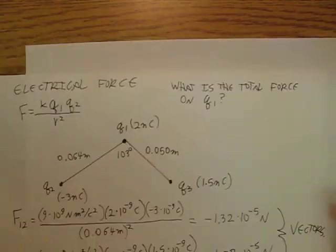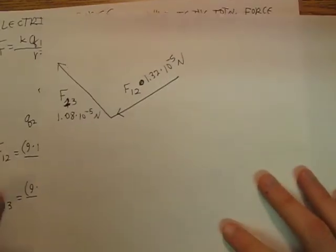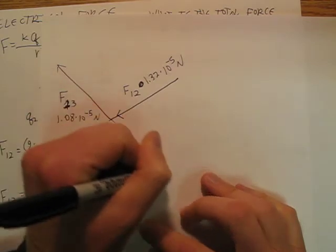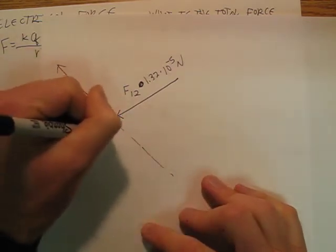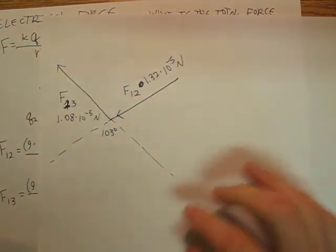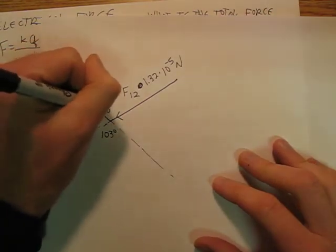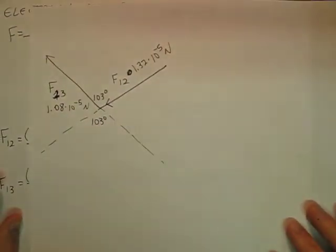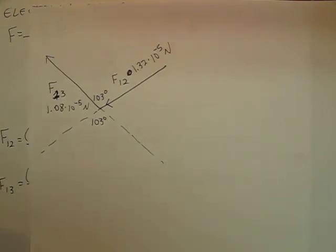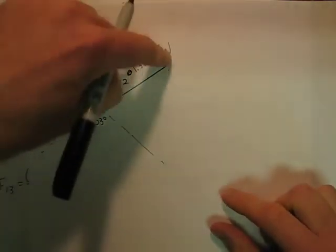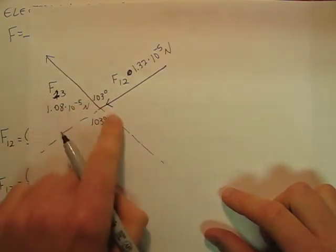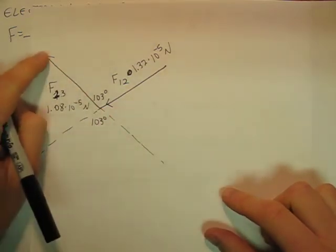So if you think about it, this is 103 degrees. And so this is going to be 103 degrees. And so I've roughly got what I want. I've got a vector coming in here, and then I've got a 103 degree angle, and I've got a vector coming out this way.